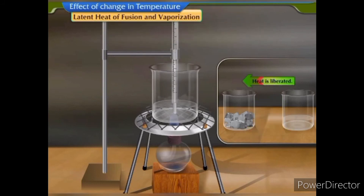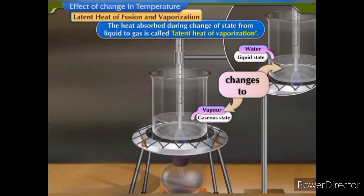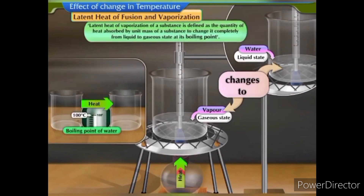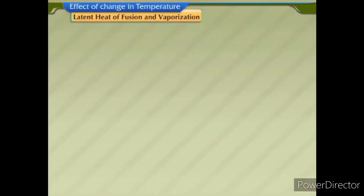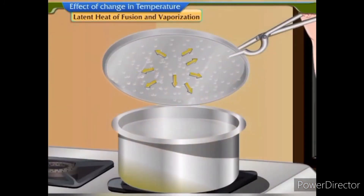If the state of the substance is changed from liquid to solid, heat is liberated. Similarly, the heat absorbed during change of state from liquid to gas is called latent heat of vaporization. Latent heat of vaporization is defined as the quantity of heat absorbed by unit mass of a substance to change it completely from liquid to gaseous state at its boiling point. During change of state from gaseous to liquid, latent heat is liberated.